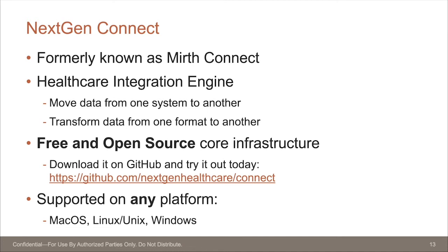Its job is to move data from one system to another. It can also transform data from one format to another, so sometimes it can move and transform data at the same time, depending on what your channels or interfaces are built to do. You have multiple disparate systems that maybe can't talk to each other natively, and Connect is that middleware piece — that hub in the middle that takes data from one point and pushes it to another, and can also massage and transform that data to conform with whatever that external system needs.